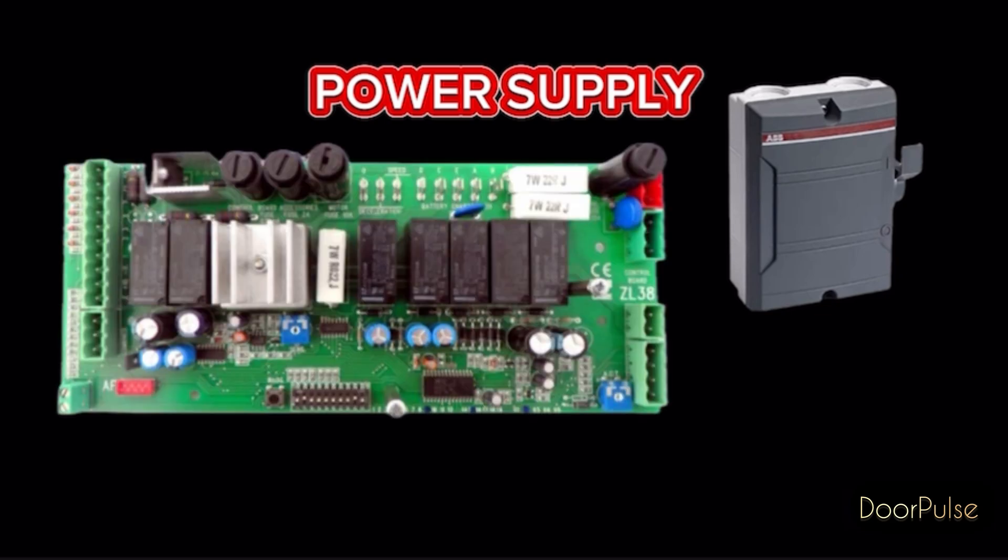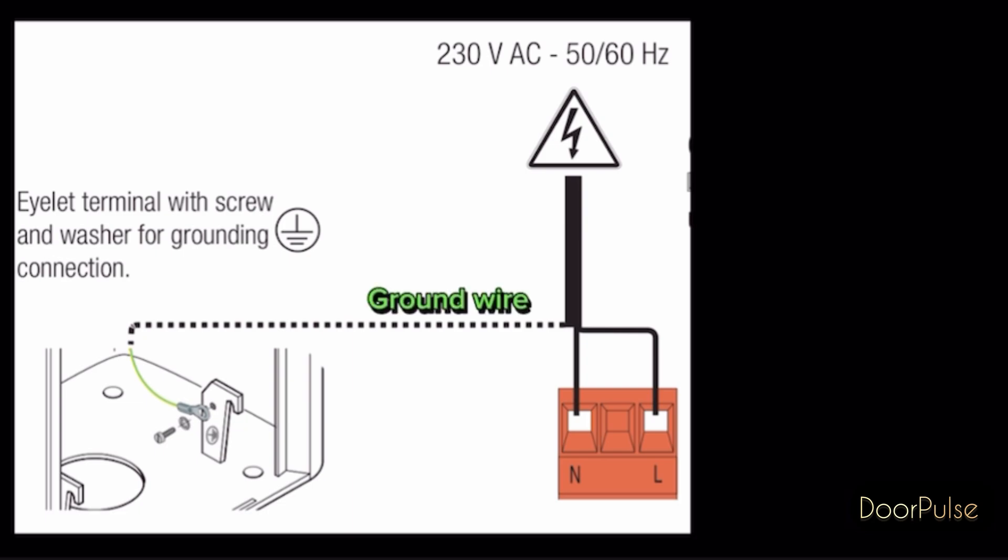Power supply: the control board working power supply is 230V AC 50 or 60Hz. The ground wire is connected in the barrier, if the eyelet terminal with screw and washer for grounding connection.